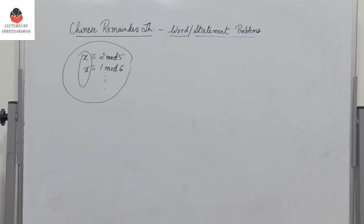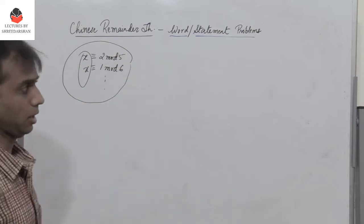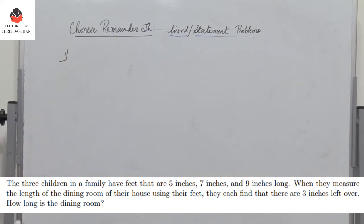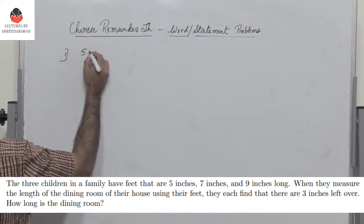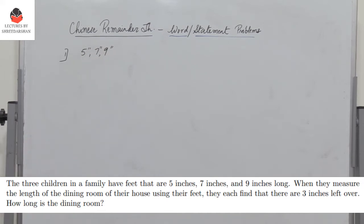These problems are very interesting. Let us go through a few statement problems and use the Chinese Remainder Theorem to solve them. The first problem states that there are 3 children in a family and their feet are of length 5 inches, 7 inches, and 9 inches long. They measure the length of a dining room using their feet and find that there are 3 inches left over. How long is the dining room?